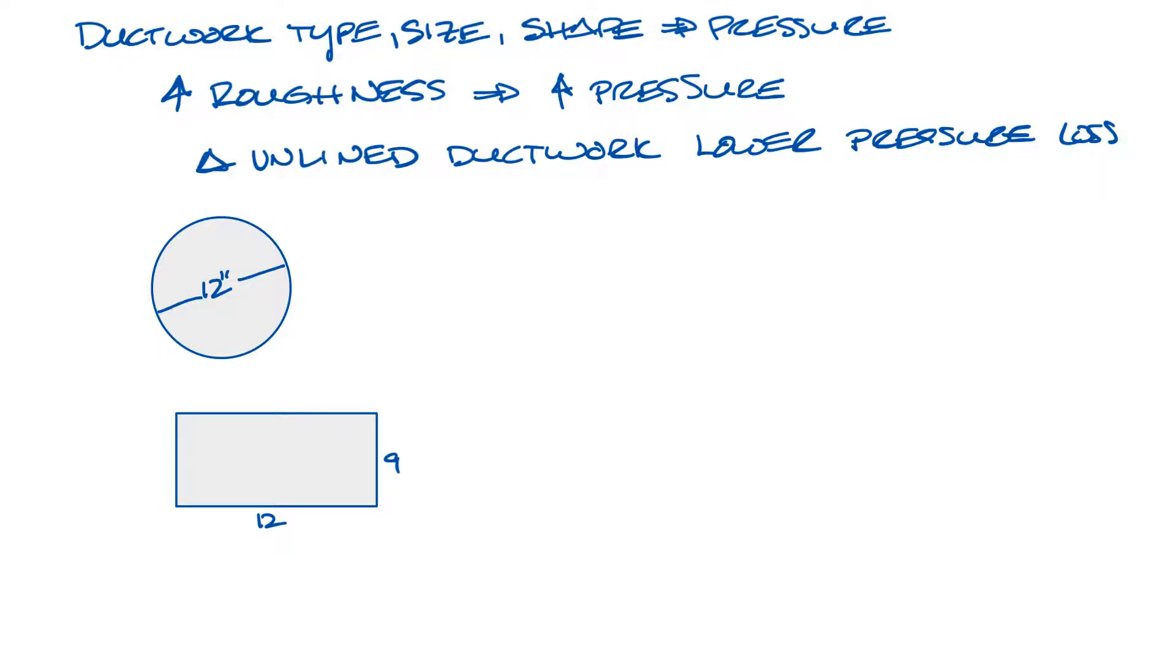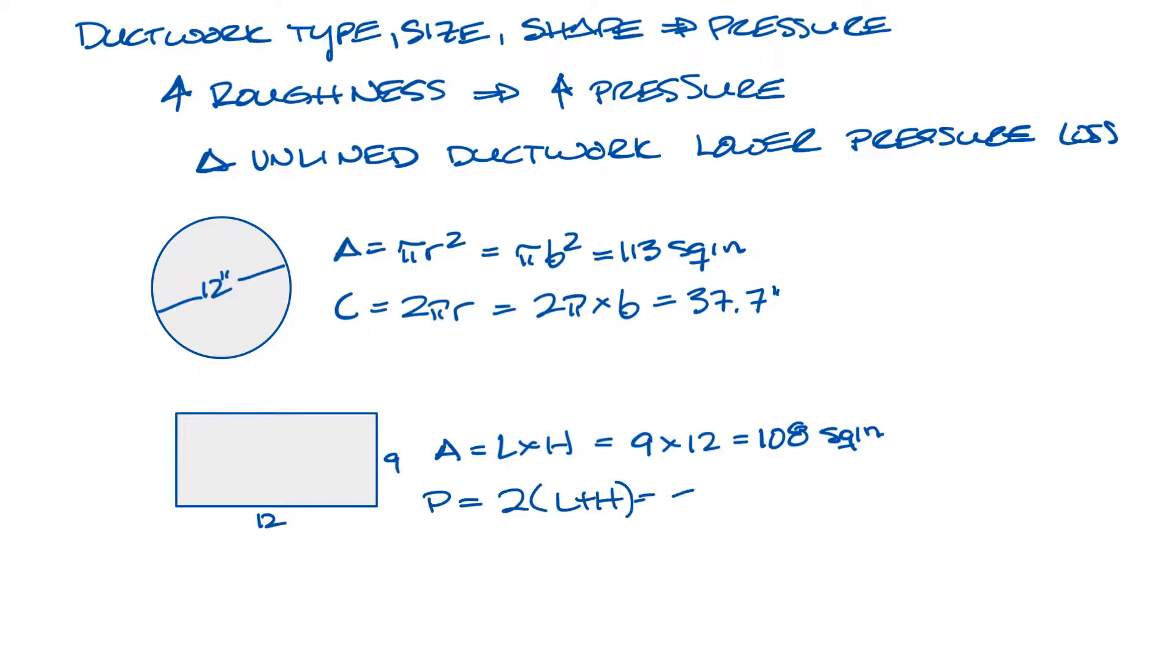So for the circle, the area is pi r squared, and r equals 6, which comes out to 113 square inches. And for the rectangle, it's length times height, which comes to 108 square inches. So pretty close. But now if we look at the surface area that the airflow will have contact to, that's 2 pi r for the circle, and that equals 37.7 inches. And for the rectangle, it's going to be 2 times length times height, and that will equal about 42 inches. So the rectangular actually had a smaller area for the airflow to pass through, but more surface area for more friction.